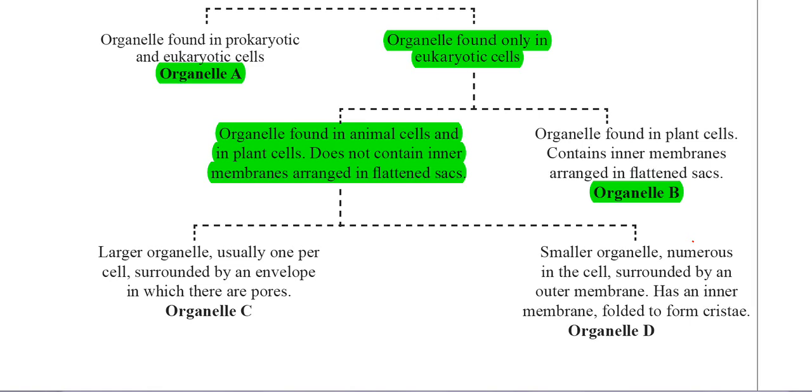Organelle C – this is looking at a large organelle. It says it is only one found in each cell and it's surrounded by an envelope which has pores. This organelle must be the nucleus. It is a large organelle, can be seen with a light microscope, and the nuclear envelope does indeed have pores.